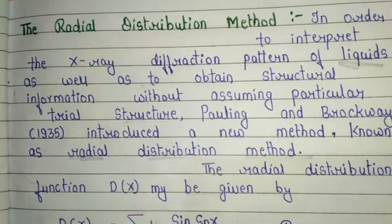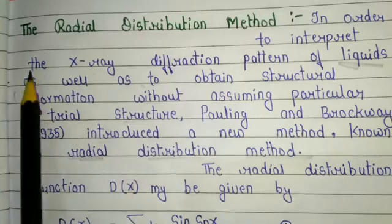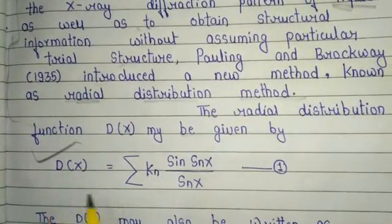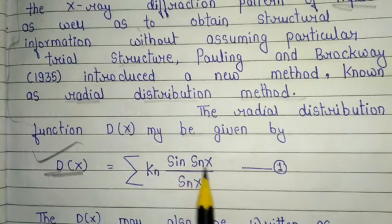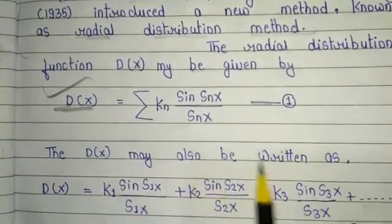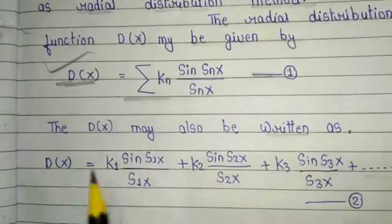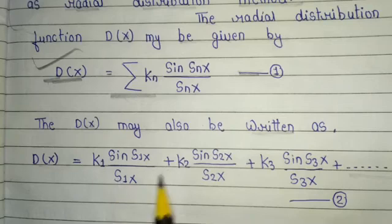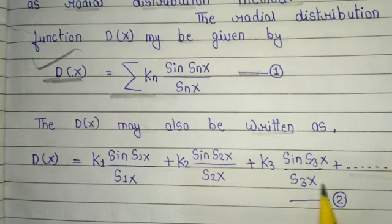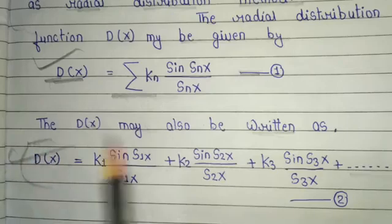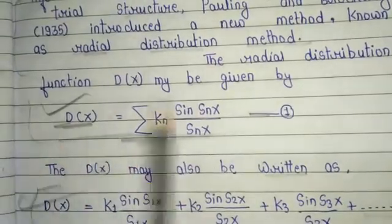The radial distribution function D(x) for interpretation of electron diffraction photographs by gas molecules is represented as: D(x) = Σ kₙ · sin(sₙ·x) / (sₙ·x). This can also be written as: D(x) = k₁·sin(s₁·x)/(s₁·x) + k₂·sin(s₂·x)/(s₂·x) + k₃·sin(s₃·x)/(s₃·x) + … These are the important formulas of the radial distribution method.